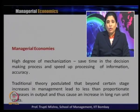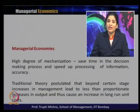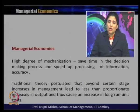Large plants and firms benefit from division of management, decentralized decision making, and high degree of mechanization, all of which bring economies of scale. However, traditional theory postulates that beyond a certain stage, increases in management lead to less than proportionate increases in output and thus cause an increase in long-run unit cost. The advantages of grouping, mechanization, and decentralization are only valid up to a point — beyond that, too much managerial control takes the firm in an adverse direction, leading to managerial diseconomies of scale.